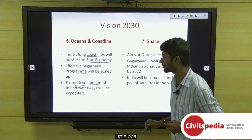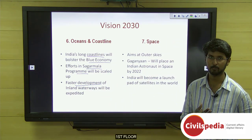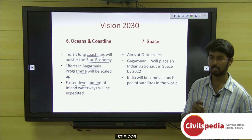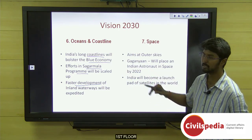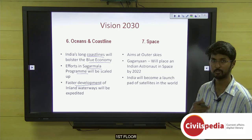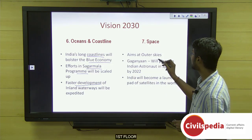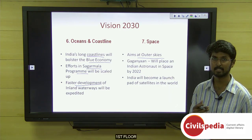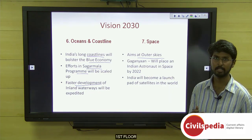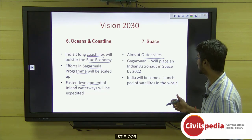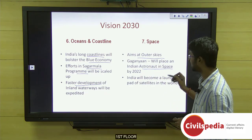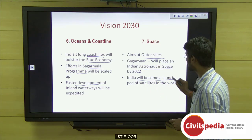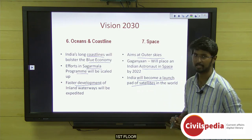Inland waterways will also be rapidly developed, linking with the first dimension's infrastructure goals. The seventh dimension focuses on space: India is already leading in space research, and is working on the Gaganyaan mission — a manned space mission to send an Indian astronaut to space by 2022. India aims to become a global launch pad for satellites.